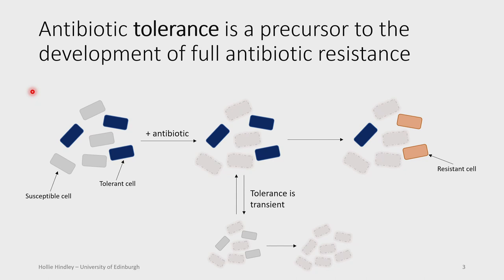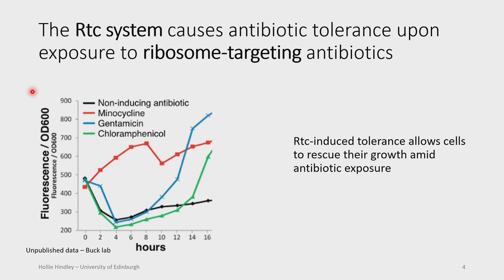We're studying this system called the RTC system, which causes this kind of tolerance upon exposure to ribosome-targeting antibiotics. On the left here you can see a plot of fluorescence, which is representing growth, and time along the bottom. The black line represents a non-inducing antibiotic — when you introduce the antibiotic at time zero, the cells start to die and they don't really rescue their growth because the RTC system hasn't been activated. However, in these three activating antibiotics, which are all targets of ribosome or RNA — especially gentamicin and chloramphenicol — you see that on antibiotic exposure the cells die, but after about four to six hours they're able to rescue their growth. That's a key feature of this RTC-induced tolerance.